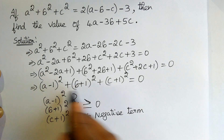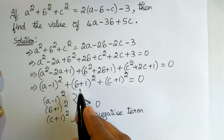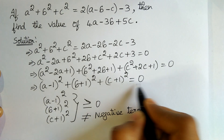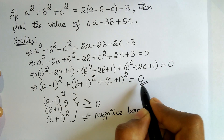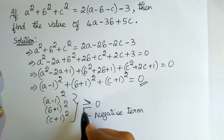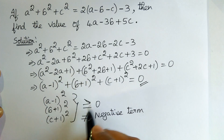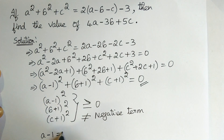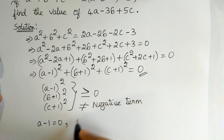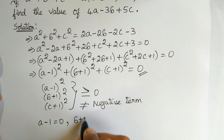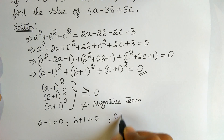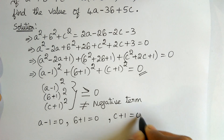If any of these three terms were greater than 0, the equation would not be satisfied since the right-hand side is 0. Therefore all three terms must equal 0: (a - 1) = 0, (b + 1) = 0, and (c + 1) = 0.